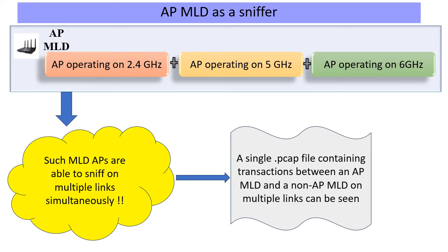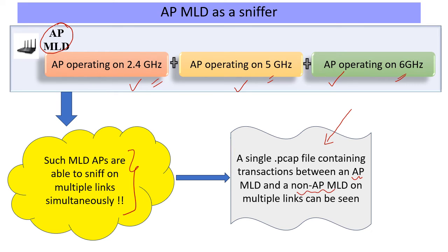We have been experimenting with real-life AP MLDs in the lab and have been able to use them in sniffer mode on multiple links simultaneously. Chipset vendors are now finding that sniffing on these new features is quite important for practical scenarios, so they have included support where the AP MLD can be used as a sniffer when operating on links like 2.4, 5, and 6 GHz. It results in a single PCAP file containing the transactions across the various links.